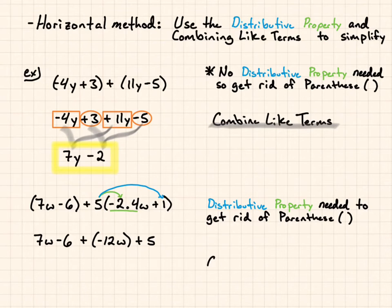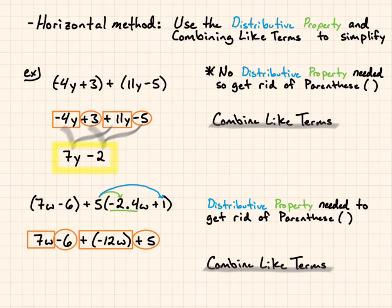Now I'm going to combine like terms to get everything simplified here. 7w plus negative 12w and negative 6 plus 5. I end up with negative 5w and then minus 1. That's my answer.